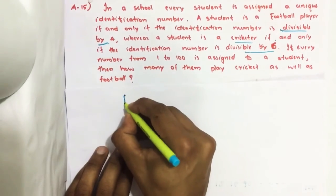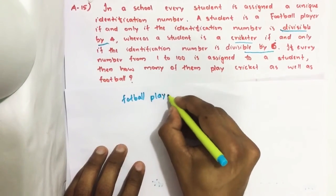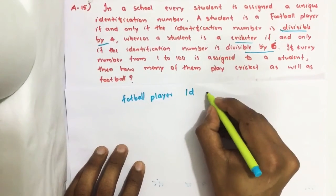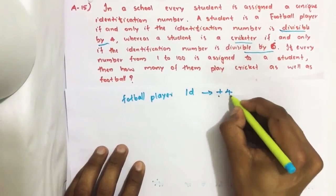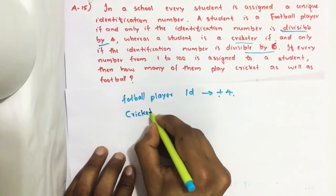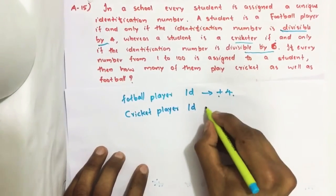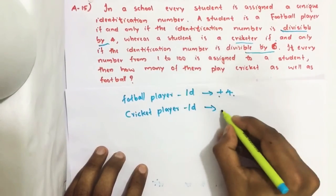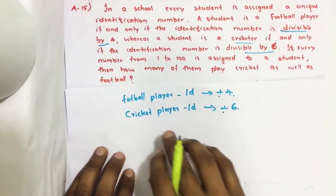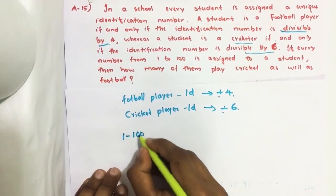So if it is a football player, the identification number must be divisible by 4. If it is a cricket player, the identification number must be divisible by 6, and all these players are given numbers from 1 to 100.